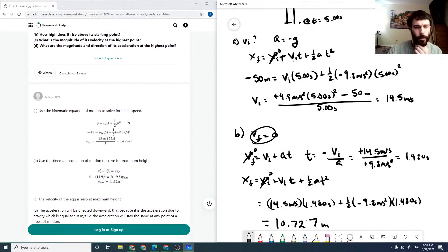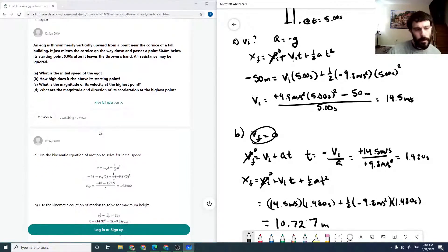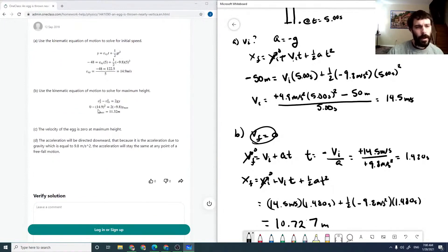So we get 14.9. For some reason they used minus 48. I don't know why that would be. It says it's 50 meters below its starting point. So that to me is minus 50. So I don't know why minus 48.